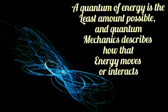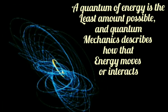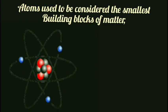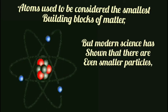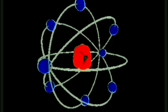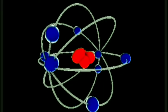A quantum of energy is the least amount possible, and quantum mechanics describes how that energy moves or interacts. Atoms used to be considered the smallest building blocks of matter, but modern science has shown that there are even smaller particles like protons, neutrons, and electrons. Quantum mechanics describes how the particles that make up atoms work.